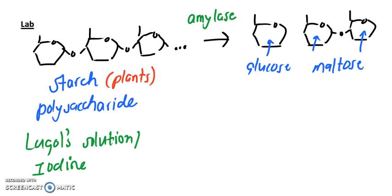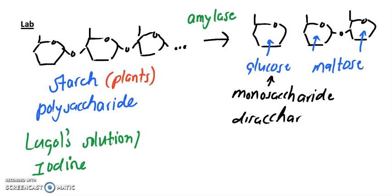And now to test for this monosaccharide and disaccharide, we can't use Lugol solution. We have to use our second reagent known as Benedict's. So today's lab you're going to be creating various solutions composed of the substrate, composed of the enzyme, and you're going to see how fast this reaction from starch to glucose occurs.